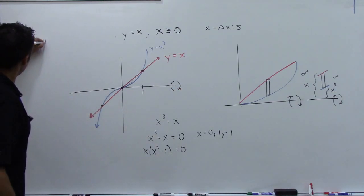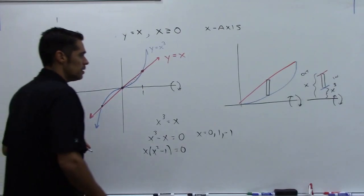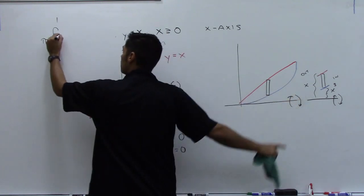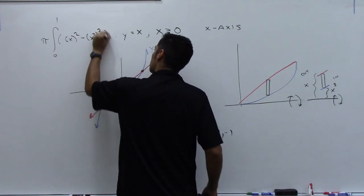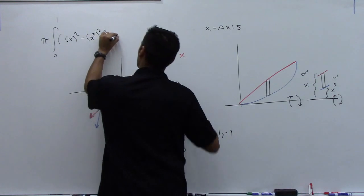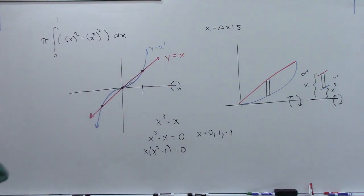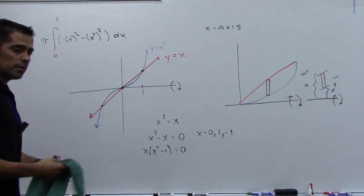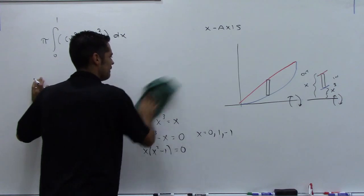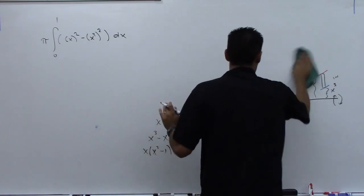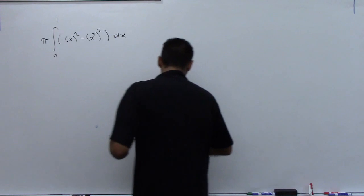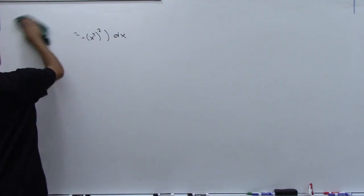Using the washer formula: pi times the integral from 0 to 1 of (x squared minus x cubed squared) dx — that is, outer radius x squared minus inner radius x to the sixth — dx. Square those, integrate, and that gives the volume. Don't forget the pi.